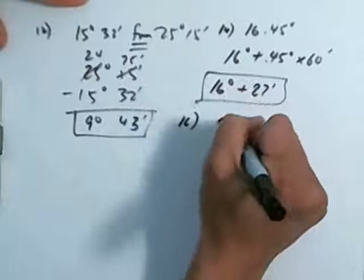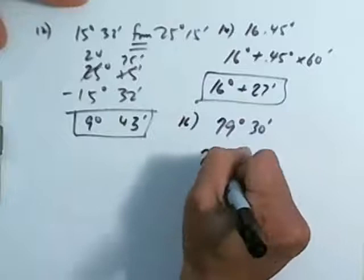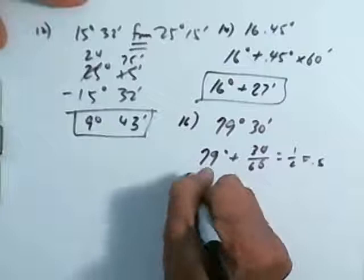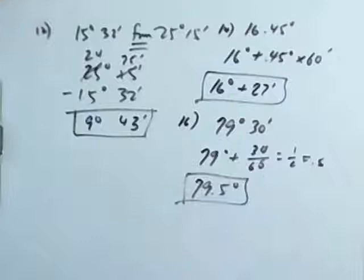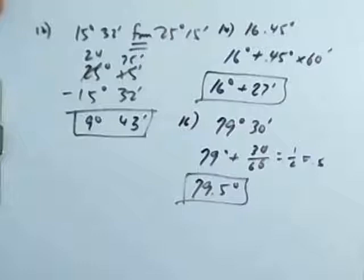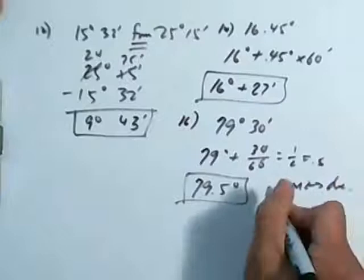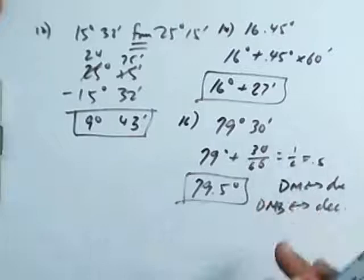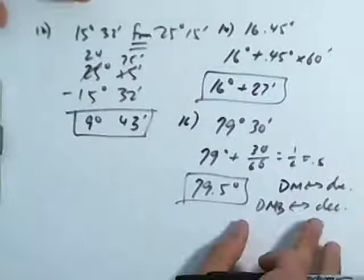Number 16: convert 79 degrees 30 minutes into decimal form. To convert minutes into decimal form, take 79 degrees plus 30 divided by 60. That gives 0.5, so the answer is 79.5 degrees. That makes perfect sense — half a degree or 0.5 degrees is 30 minutes. Remember there are 60 minutes in one degree. Make sure you can convert from DMS — degrees, minutes, seconds — to decimal and back. There is a program in your calculator that does that for you, but I'm not going to show you where it is.